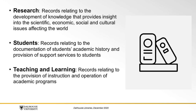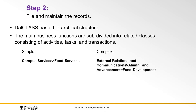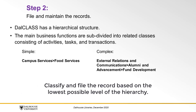Do the records you're dealing with fall into one of these primary business functions? If so, you will need to continue on with the next three steps. Step 2: File and maintain the records. Once you have identified the records as university records, you can use Dal class to correctly classify and manage them. Dal class has a hierarchical structure. The main business functions are subdivided into related classes consisting of activities, tasks, and transactions. Some record classes are simple, for example, Campus Services, Food Services. Others are more complex, for example, External Relations and Communications, Alumni and Advancement, Fund Development. Classify and file the record based on the lowest possible level of the hierarchy.